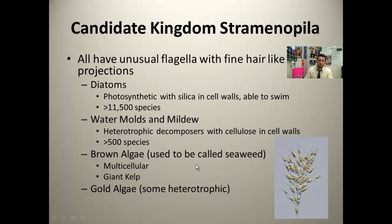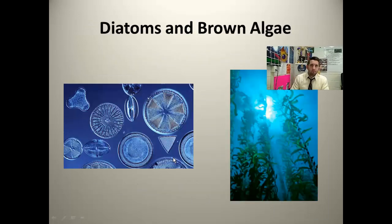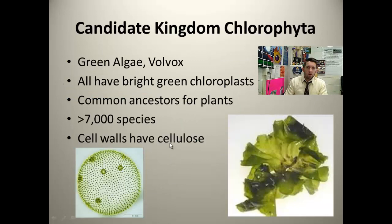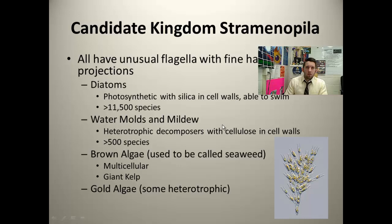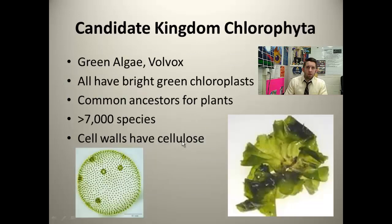Now we have the golden algae as well. Here's a picture of golden algae — some are heterotrophic, but most are autotrophic. Chlorophyta — these are the green algae. The volvox — this was the same picture on the opening slide — is a type of chlorophyta. They have chloroplasts, which means they're photosynthetic. Cellulose in their cell walls, just like we were talking about over in the straminopola.